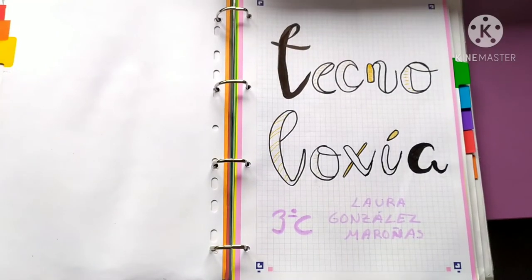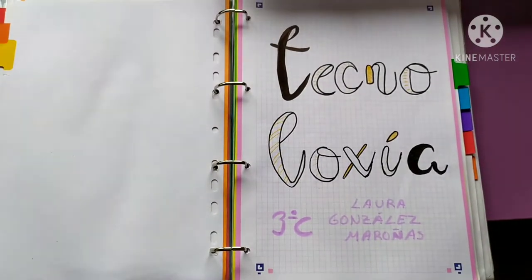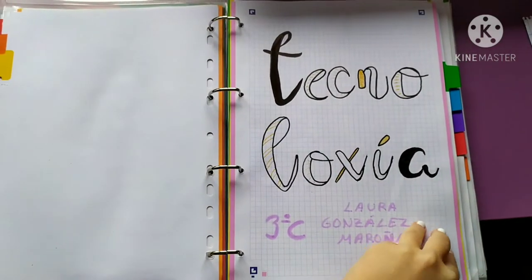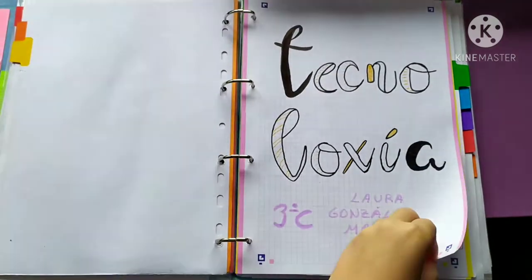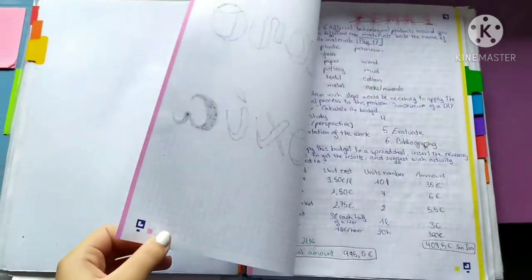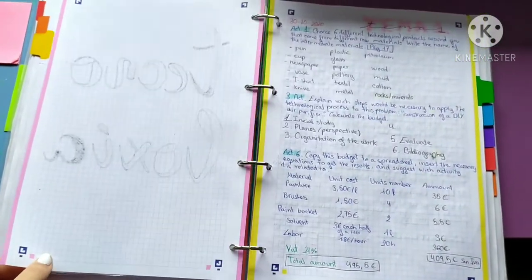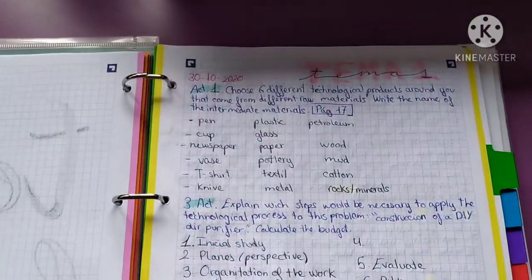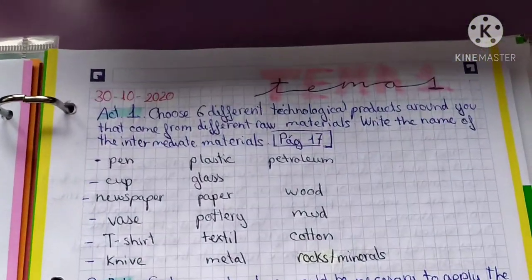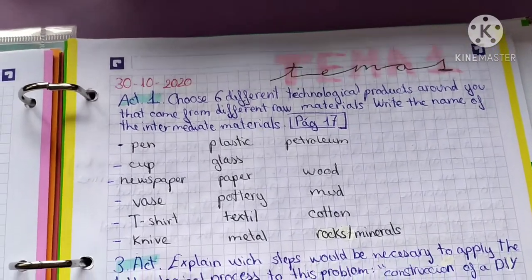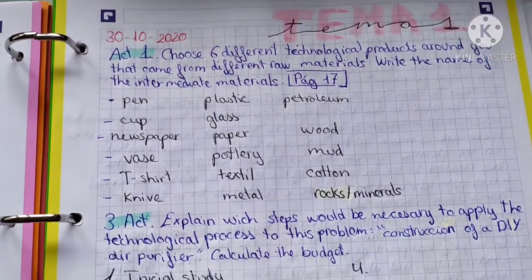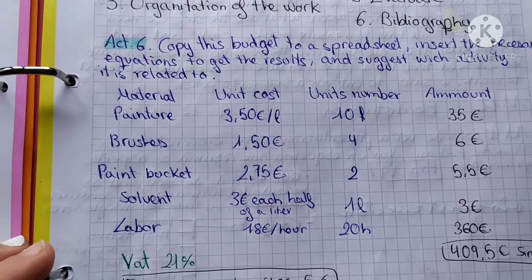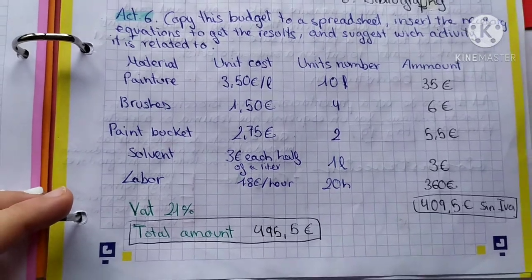My notebook begins with a cover with my name and the subject. We turn the page and we have Term 1 with exercises on page 17: exercises 1, 3, and 6.